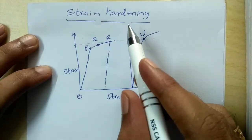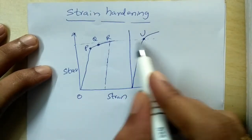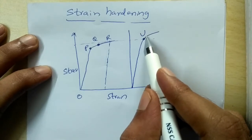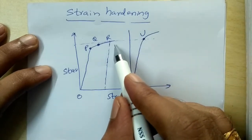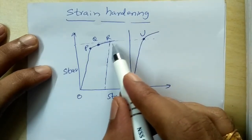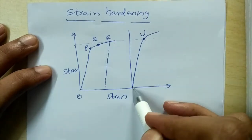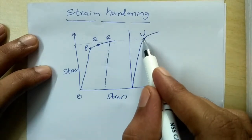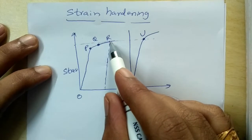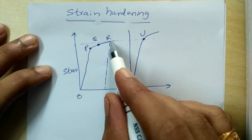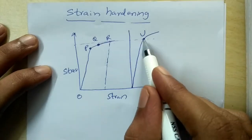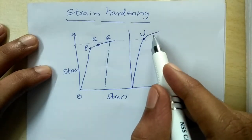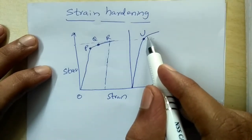When such plastically deformed materials are stressed again, an increase in yield point is observed — this is strain hardening. The material, already plastically deformed, when stressed again shifts its yield point to point U, which corresponds to point R on the earlier curve. The proportionality limit also shifts to point U. Strain hardening is thus a process of making a metal harder.